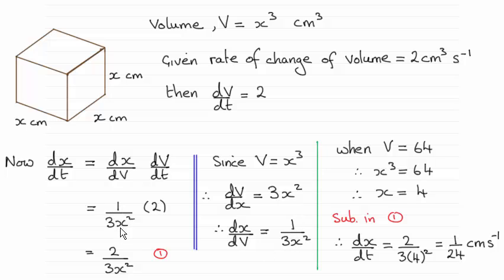So I've substituted that into here, and dV/dt, the rate of change of volume, remains constant at 2, so I can put that in there. And cleaning this up gives us a general formula then for the rate of change of the length.